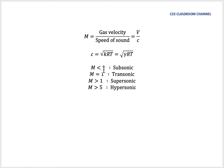If we get M less than 1, we call it subsonic. If M is equal to 1, we call it transonic. If M is more than 1 but less than 5, we call it supersonic. And if it is more than 5, we call it hypersonic.